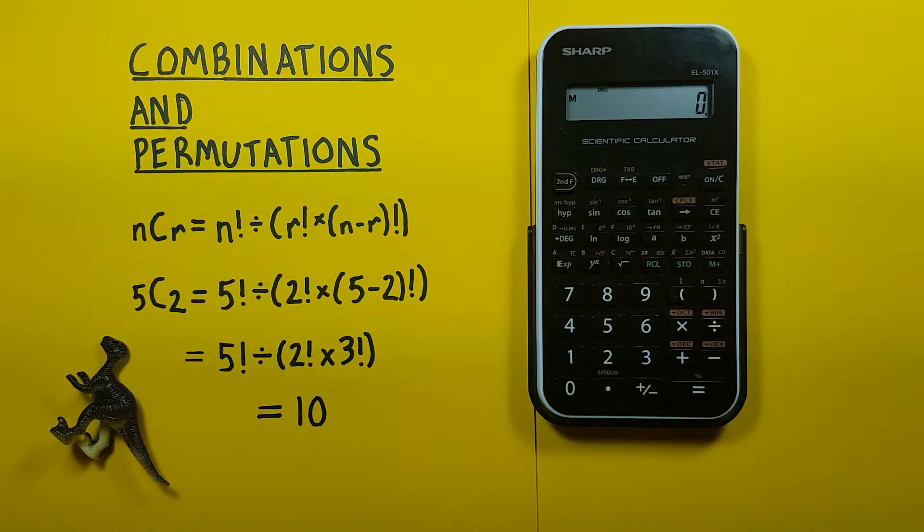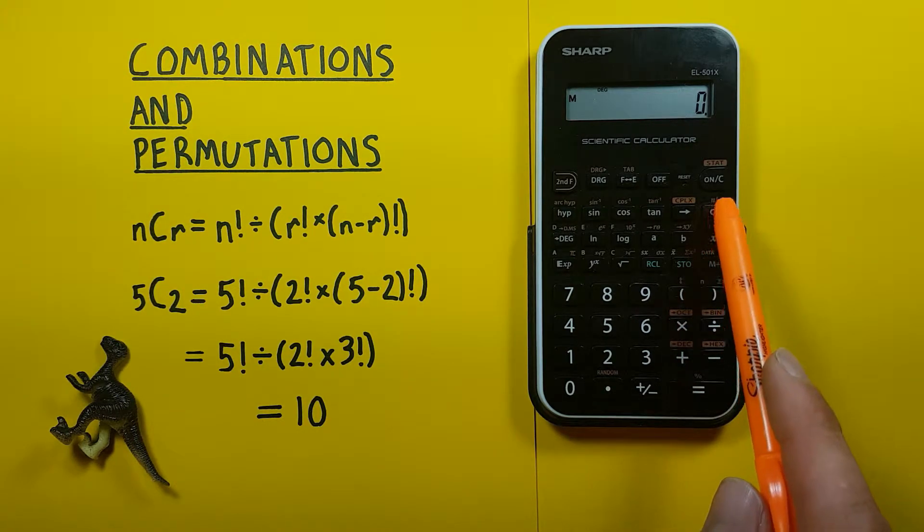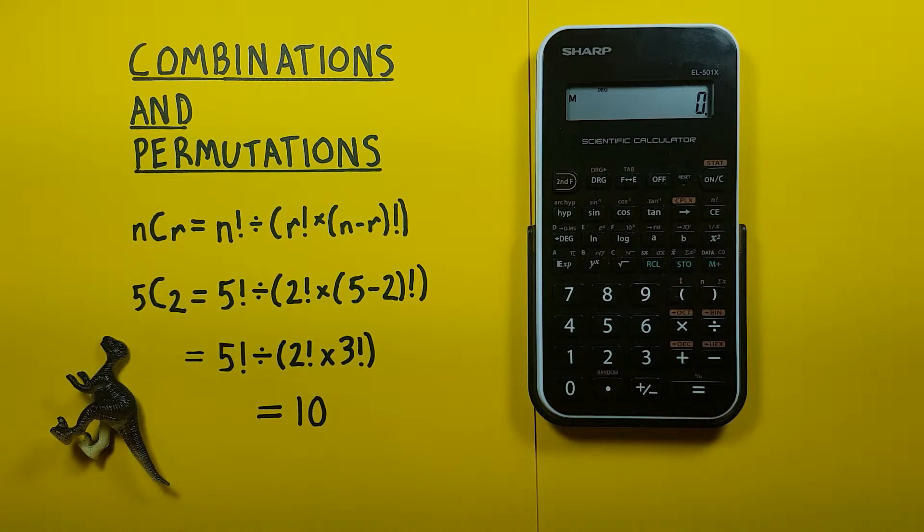All right, to do this all we need is a factorial key. On this calculator it's this N exclamation mark above the CE key here. Typically on your calculator that'll be indicated by an exclamation mark or an N exclamation mark.